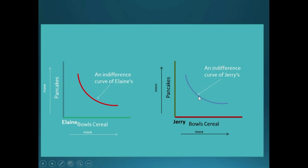On the graph on the right, we have the analogous indifference curve graph for Jerry. As you move up this graph, it involves more pancakes for Jerry, and as you move right, it involves more bowls of cereal for Jerry. Now, what we'd like to do is combine these graphs in some meaningful way. You might think to just superimpose them — put Jerry's right over Elaine's — but there's a problem with that. As you move up and to the right when they're superimposed, it implies that both Elaine and Jerry get more of both goods.